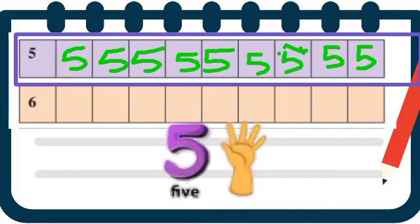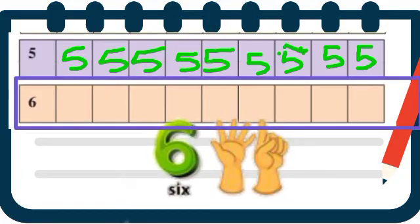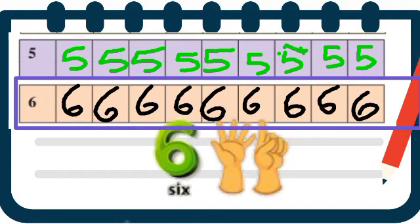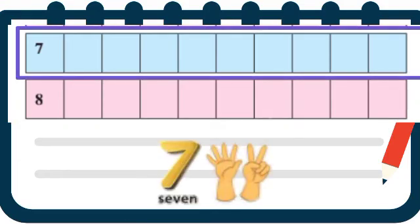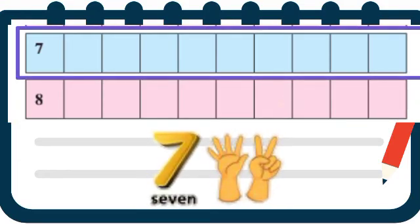Next number. This is a symbol of 6. 5 and 1 make 6 — 5 aani ek milun bantil 6. Let's do practice writing 6.